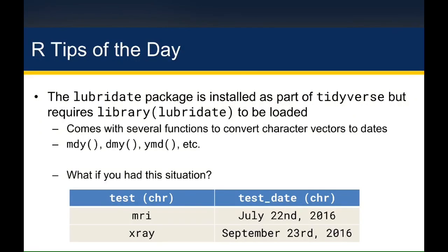As you can imagine, when dates are coded in a column of a data frame, there are many different orders they could take on. The way lubridate handles this is by having separate functions — mdy, dmy, ymd, etc. — which let R know which order you expect to find the data in. That's the only thing you have to do on your end, and lubridate will do everything else for you.